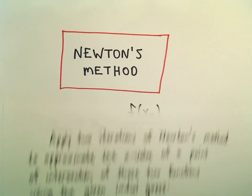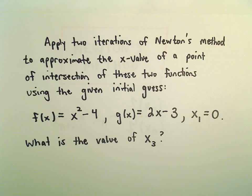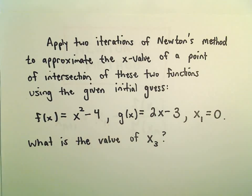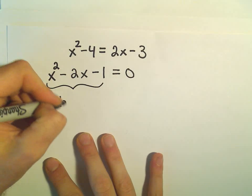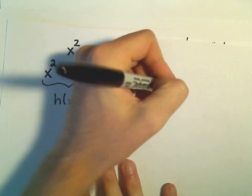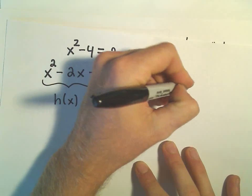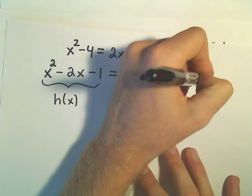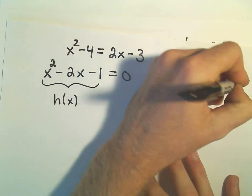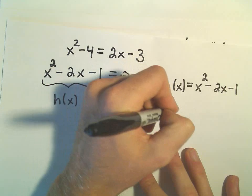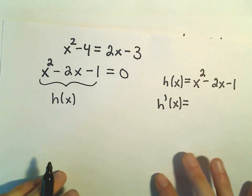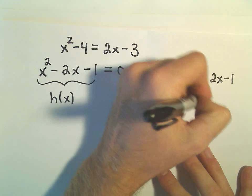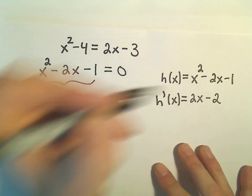So our formula, we use f of x and f prime when we write it generically. But I've already used the function f of x. So I'm going to call this function h of x. So h of x is going to equal x squared minus 2x minus 1. We have to take the derivative of that when we use Newton's method formula. So the derivative of x squared is just 2x. And then negative 2x will give us negative 2.